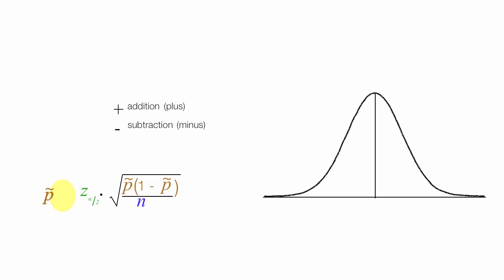This is called the confidence coefficient, and I discuss the meaning of this in another video. Multiplication. And then we have the n for the sample size.